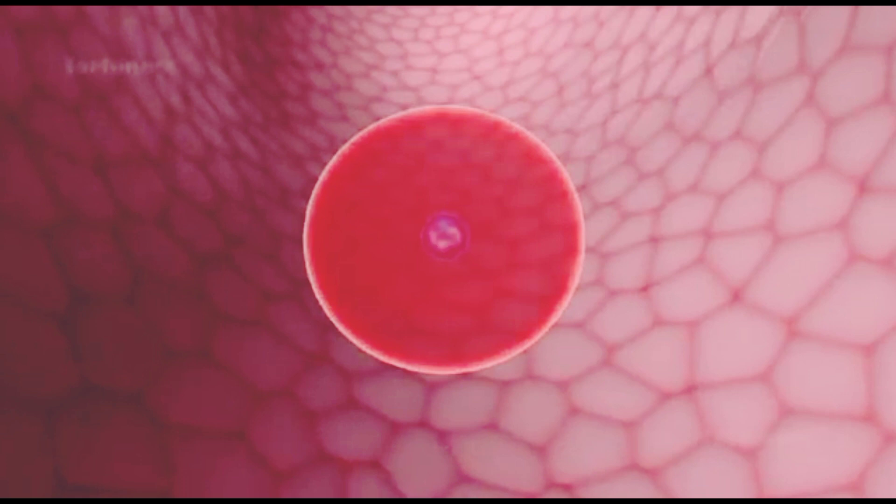Inside the red blood cells, the merozoites will transform into feeding forms called trophozoites, feeding on the hemoglobin and transforming into schizonts.